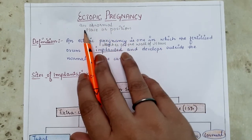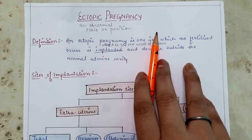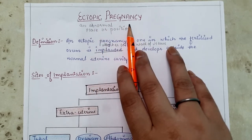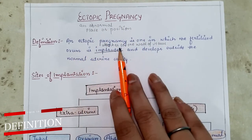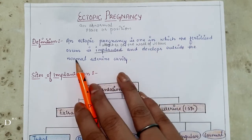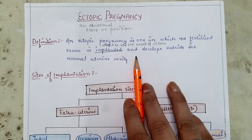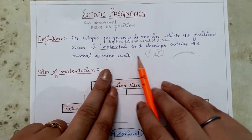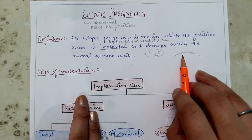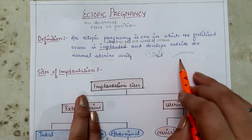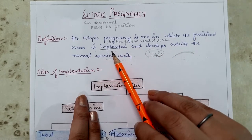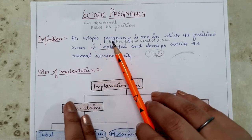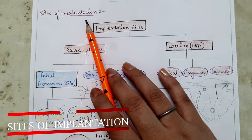The meaning of 'ectopic' is an abnormal place or position. When the fertilized ovum is implanted at some abnormal site, that is known as ectopic pregnancy. An ectopic pregnancy is one in which the fertilized ovum is implanted or attaches and dwells outside the normal uterine cavity. Normally it implants superiorly — near the fundus — at the posterior wall of the uterus. If it attaches at any other site, inside or outside the uterine cavity, it is ectopic pregnancy.